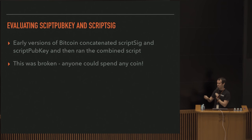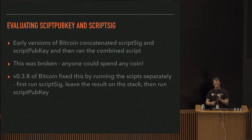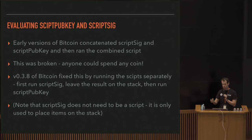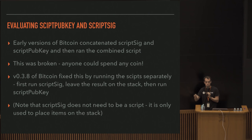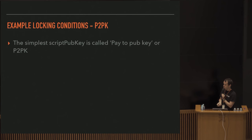Unfortunately, that approach is broken - anyone could spend anyone else's coins under that system. It was fixed in v0.3.8 by running the scripts separately. First you run the ScriptSig, which places elements onto the stack; you leave those elements there and then run the ScriptPubKey. Because the spender is providing the ScriptSig, it doesn't necessarily need to be a script - it's just placing data elements onto the stack.